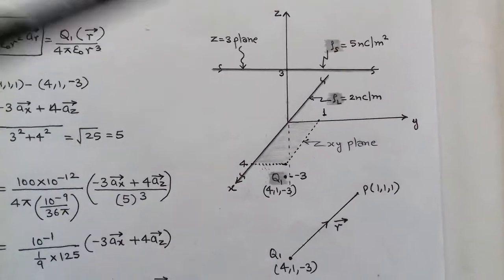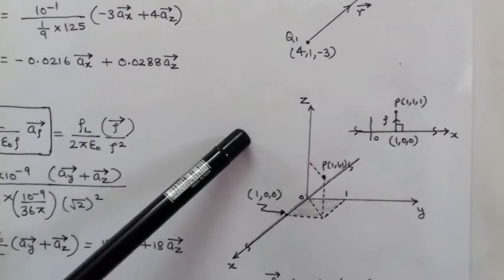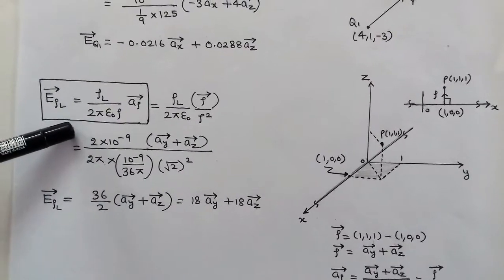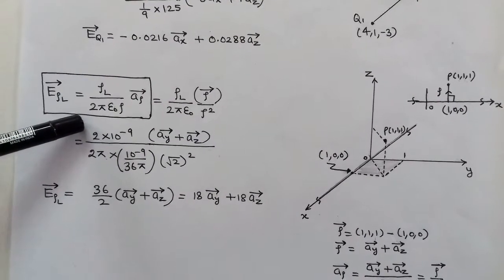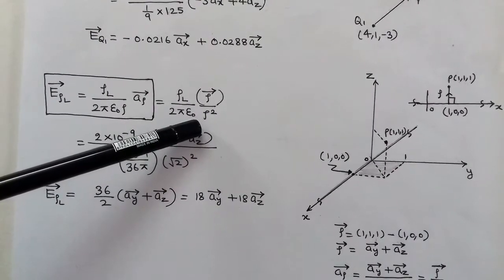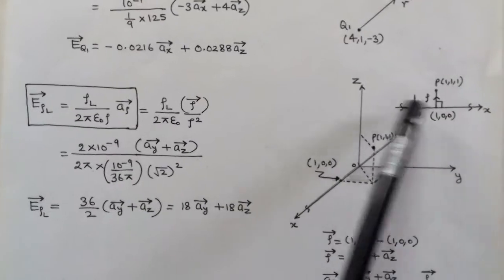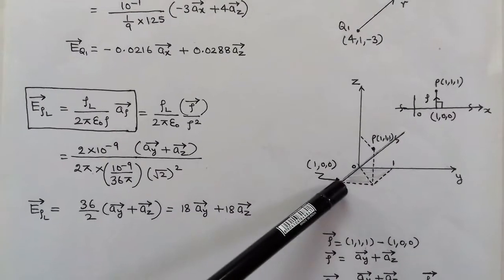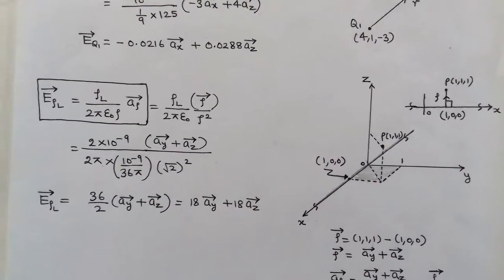The second case is the electric field due to an infinite line charge. This line charge has density ρL = 2 nanocoulombs per meter and is situated on the x-axis. The formula is ρL upon 2πε₀ρ times unit vector ρ, which in vector form becomes ρL upon 2πε₀ times vector ρ divided by ρ².